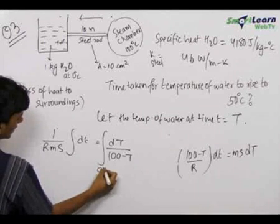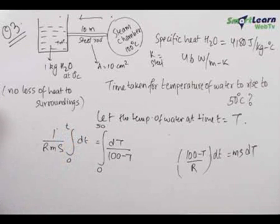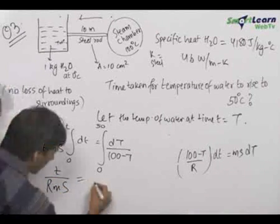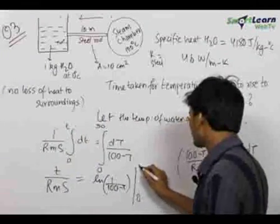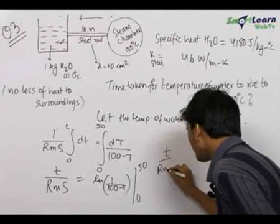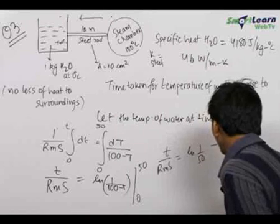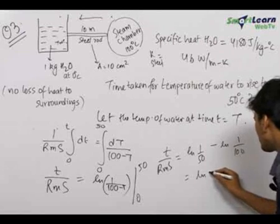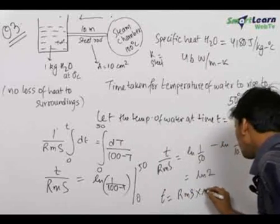The temperature rises from 0°C to 50°C and the time taken is 0 to T. Therefore we can write T/(R·m·s) = [−ln(100 − T)] evaluated from 0 to 50, which equals ln(1/50) − ln(1/100). This simplifies to ln(100/50) = ln(2). Therefore the time T = R × m × s × ln(2).